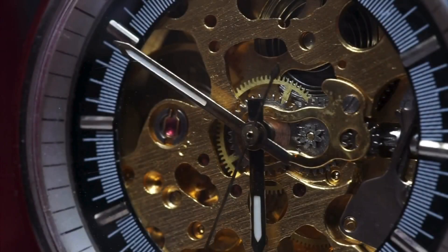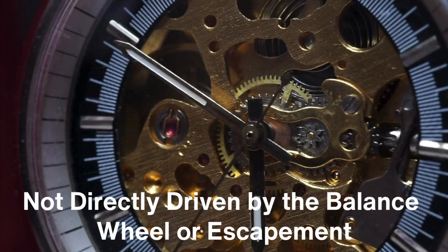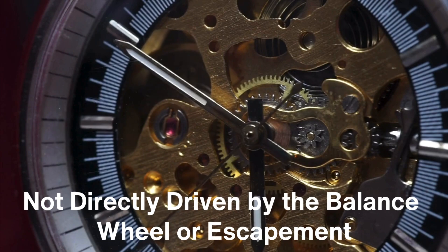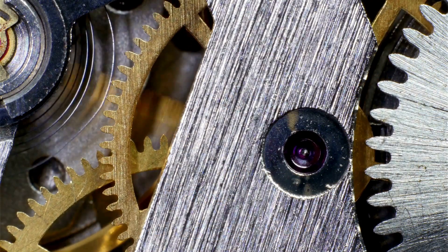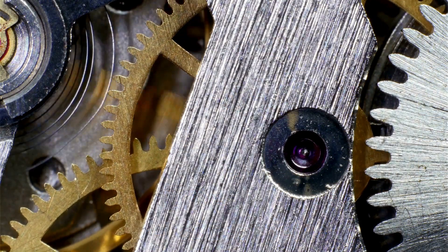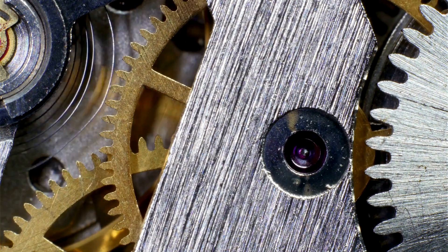The hands of a mechanical watch, therefore, are not directly driven by the balance wheel or escapement. Instead, they are moved by the gears that transmit energy from the mainspring. As long as the mainspring has energy stored within it, the watch will continue to tick and the hands will continue to move.